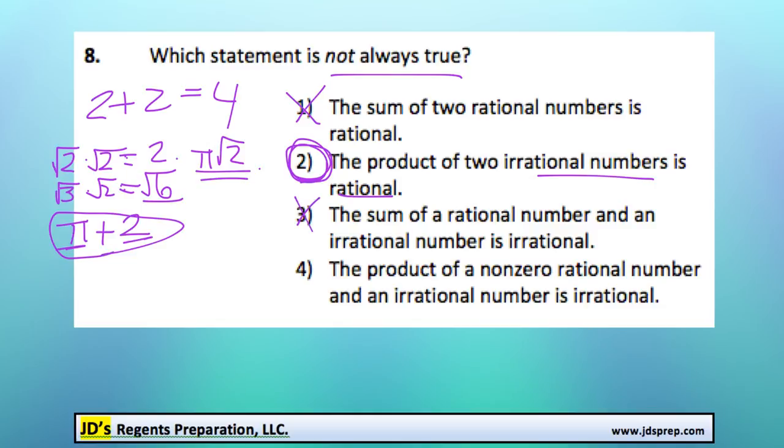And the product of a non-zero rational number and an irrational number is irrational. Holy smokes, so many irrationals. Okay, so similar to above, if we multiplied pi times 2 or 2 pi, that is irrational. So that shows that that could be true as well.